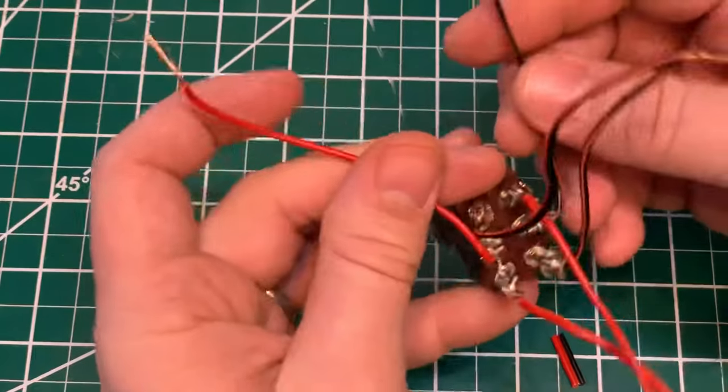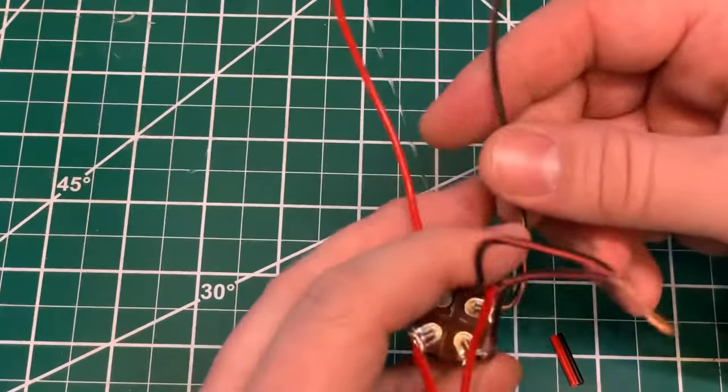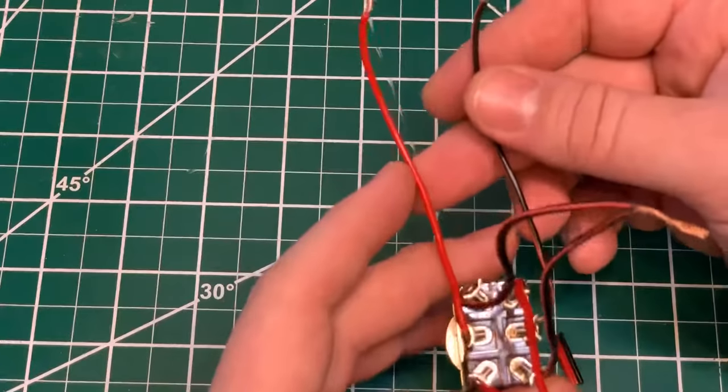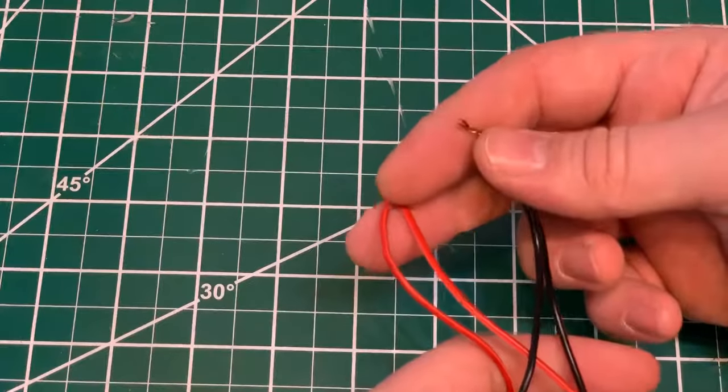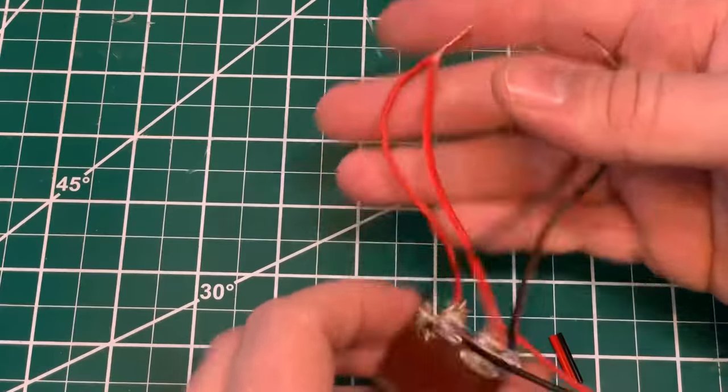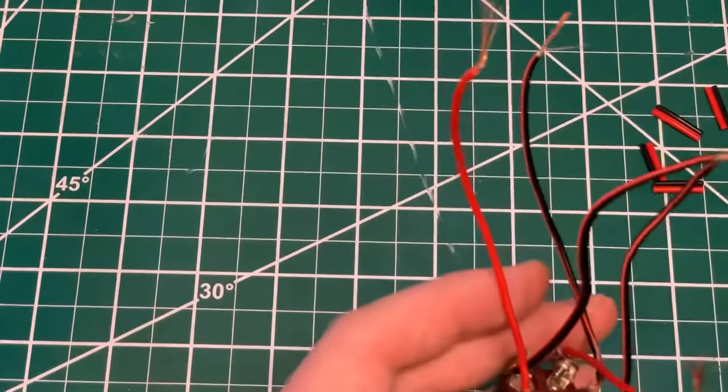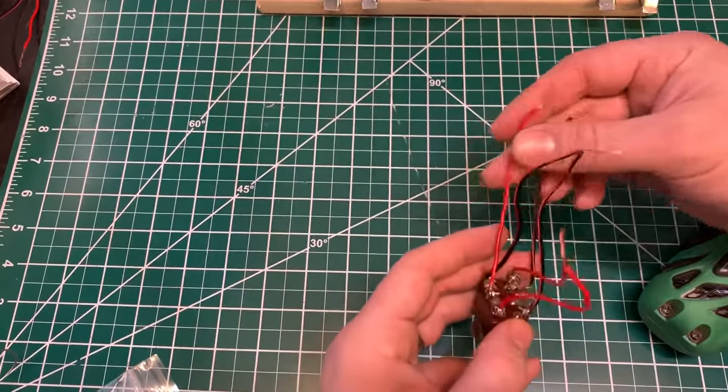So then these two middle ones are loose, so you can actually go both ways. These two can go to the battery and then these two can go to the motor, or you can even switch it and have these going to the motor and these going to the battery. It doesn't matter either way. So I'm going to put the middle two on the battery.